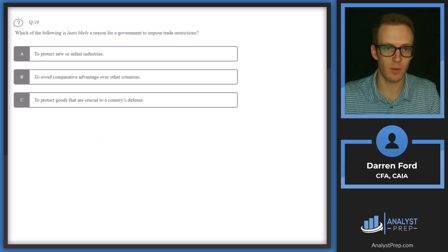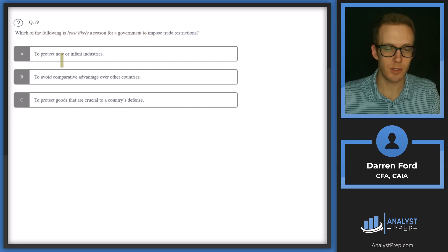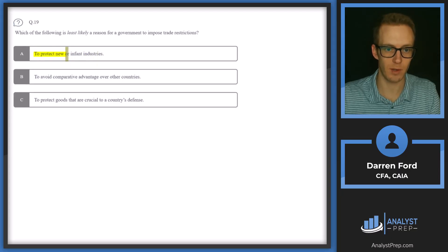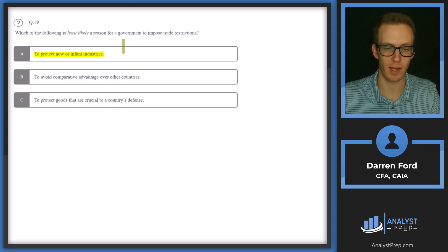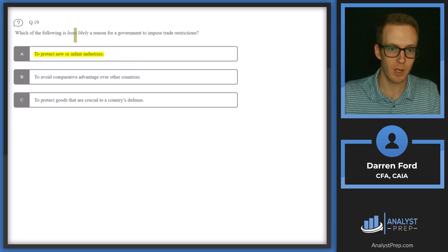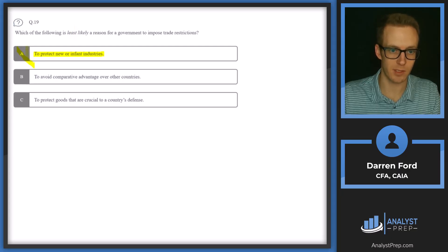Question 19: which of the following is least likely a reason for a government to impose trade restrictions? Option A: to protect new or infant industries. Yes, this is a reason to impose trade restrictions — by not allowing foreign goods into the country, you force domestic companies or entrepreneurs to innovate and provide that product internally. Since our answer is least likely, we can cross this off.